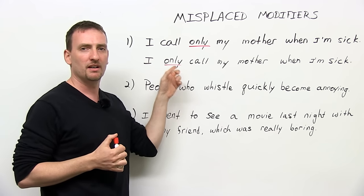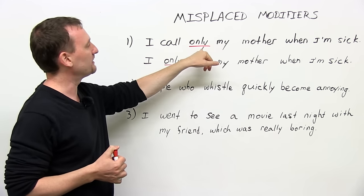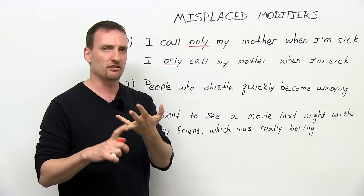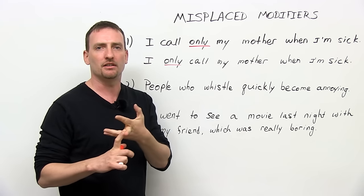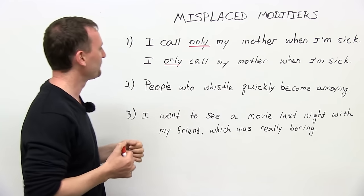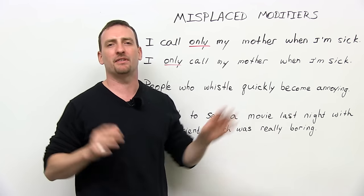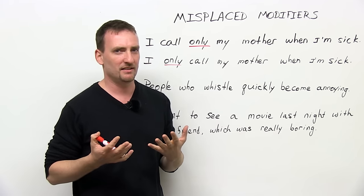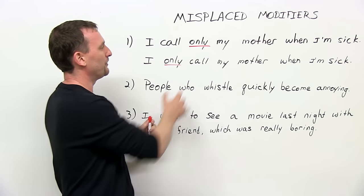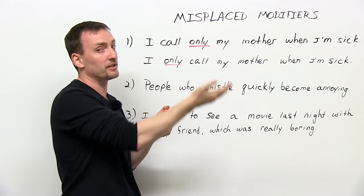People don't realize that this word doesn't necessarily go where it should go half the time. So what does this sentence mean? 'I call only my mother when I'm sick' means when I'm sick, I don't call my friends, I don't call my girlfriend or boyfriend, I don't call my aunt or uncle — only my mother. But 'I only call my mother when I'm sick' means when I'm healthy, I don't call her — only when I'm sick do I call her. So you understand what this word does to the sentence. Very important where you place it to know which word it's going to modify.